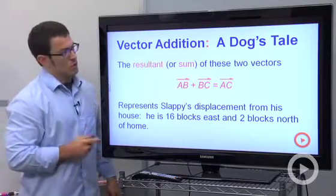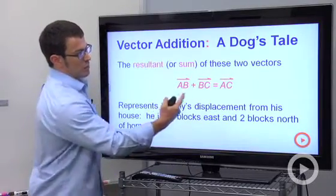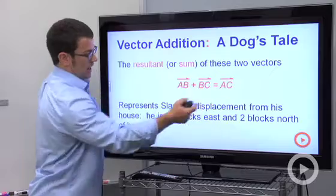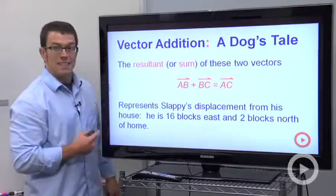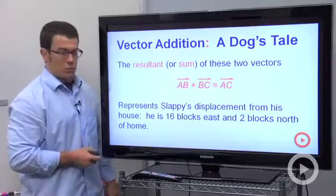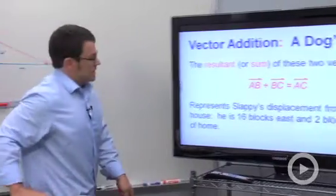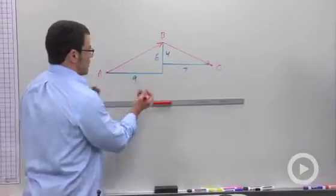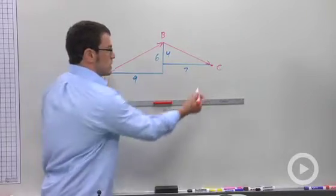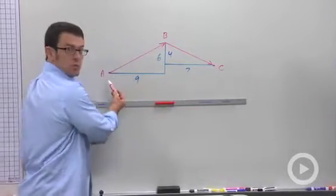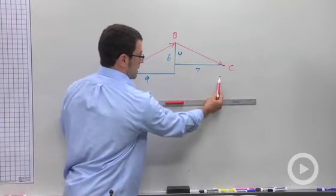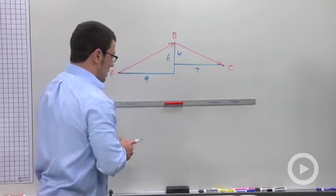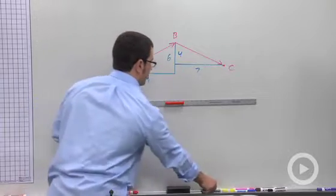Finally, the resultant or sum of these two vectors, AB plus BC, is the vector AC. And this represents Slappy's displacement from his house. He's 16 blocks east and two blocks north. Let's take a look. If you think about where his location is at point C with respect to his original location at point A, he is 16 blocks east and two blocks north. And that vector would be vector AC.